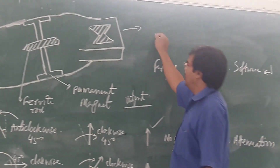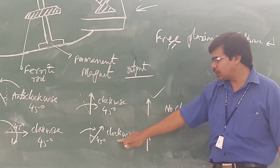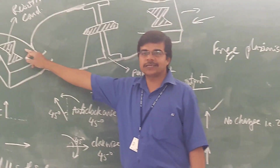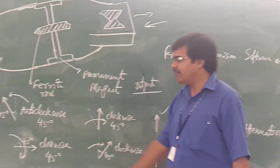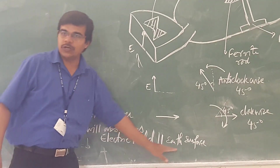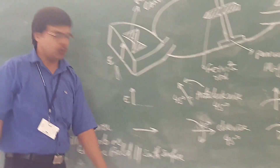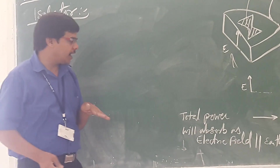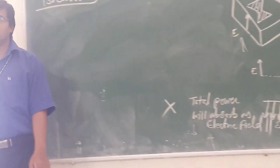On the other hand, when input is given at port 2, because of the ferrite rod and permanent magnet you get a clockwise rotation of 45 degrees, and passing through the twist gives a further clockwise rotation of 45 degrees. At port 1, the electric field ends up parallel to the resistive card's surface, so it absorbs the total power and you get no output.